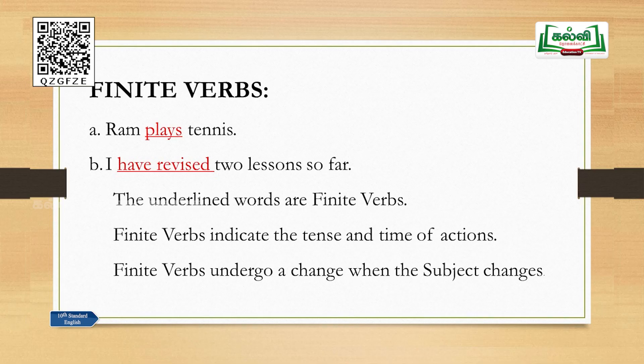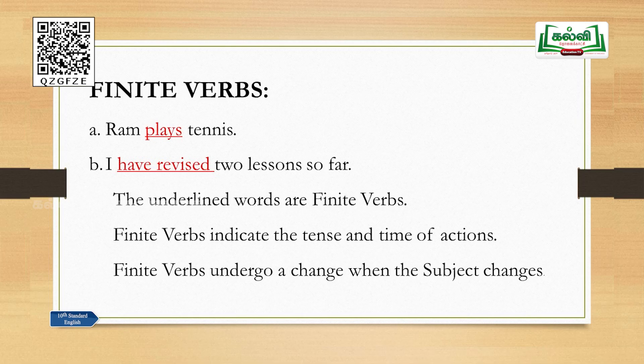Rule number two: finite verbs undergo a change when the subject changes. In 'Ram plays tennis,' Ram is the subject, plays is the verb, and tennis is the object. When I change the subject Ram to 'I,' we cannot use 'plays' — it becomes 'I play tennis.' So when the subject changes, the verb undergoes a change. If a verb changes when the subject changes, it is called a finite verb.